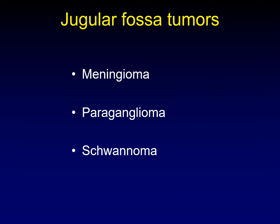While talking about lower cranial nerves, we should discuss the jugular fossa. Three nerves leave the skull through the jugular fossa: the 9th, the 10th, and the 11th cranial nerves. Dysfunction of these nerves can often be caused by masses that arise in the jugular fossa, so let's take a moment to talk about those masses.